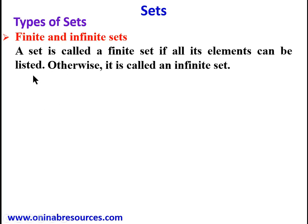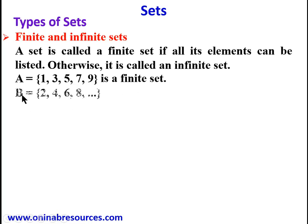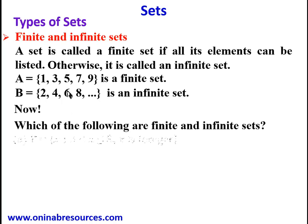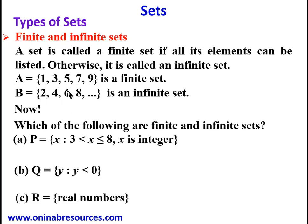We take some examples. Set A is the set {1, 3, 5, 7, 9} — this is a finite set. Set B is the set {2, 4, 6, 8, ...} — the dot dot dot means the list continues, so this is an example of an infinite set. These are the positive even numbers and the list is endless.